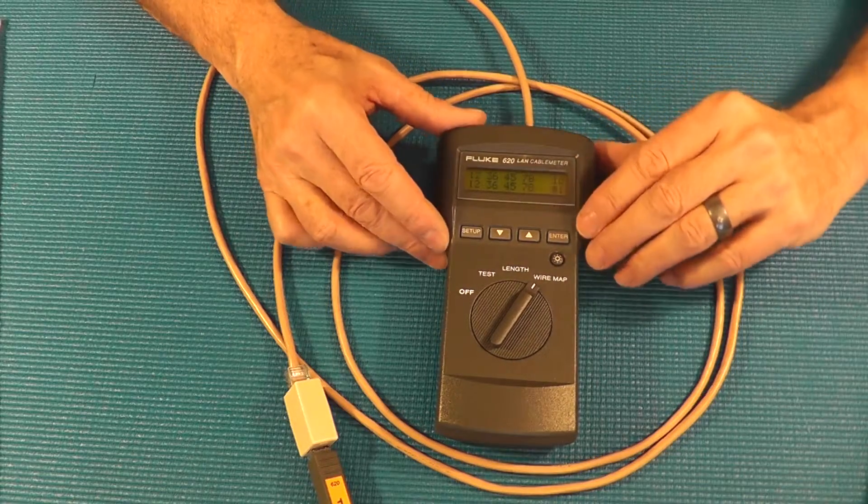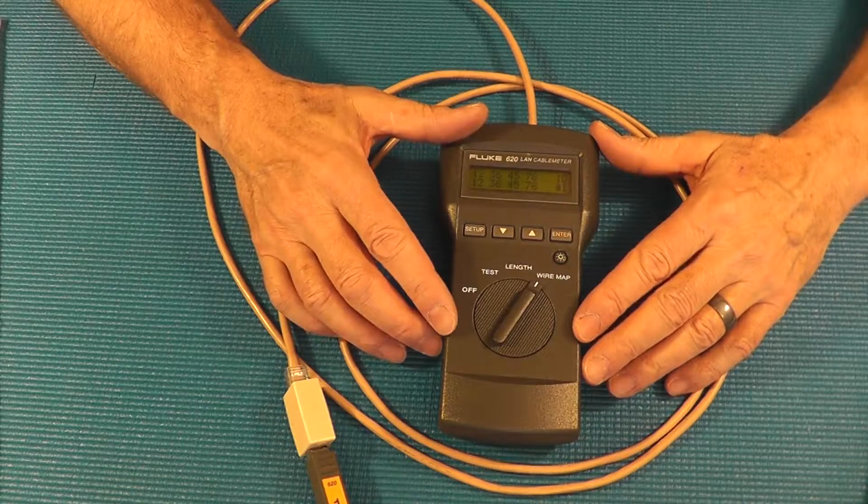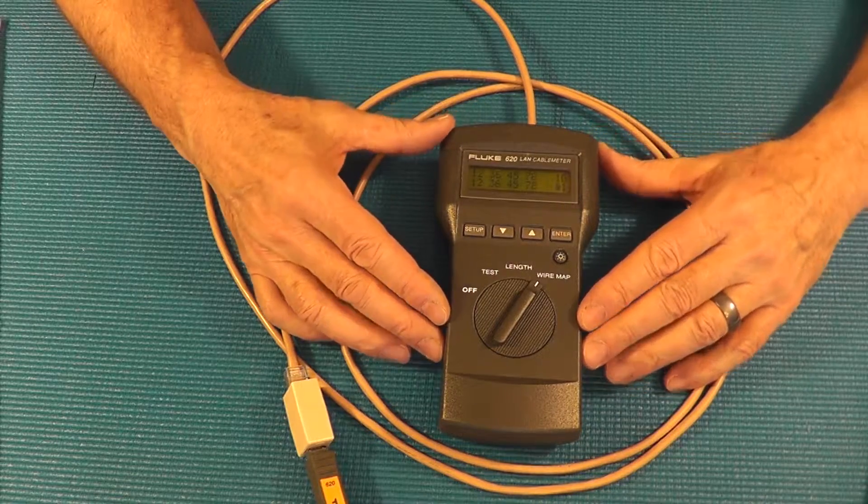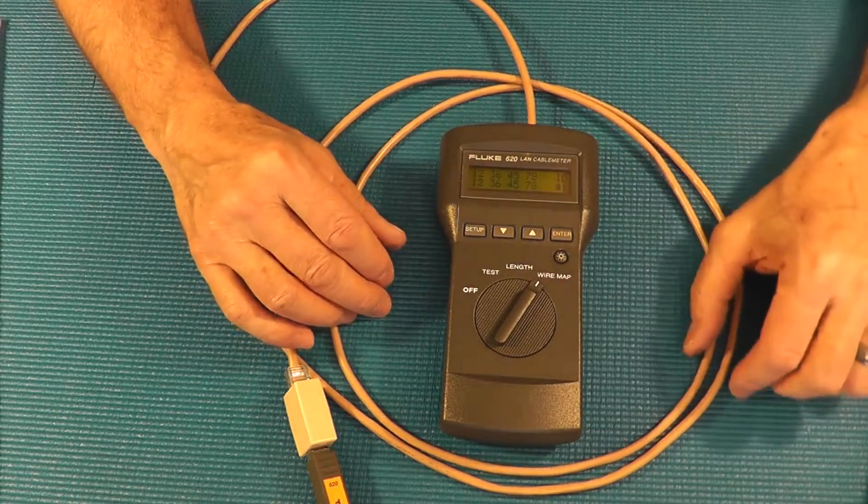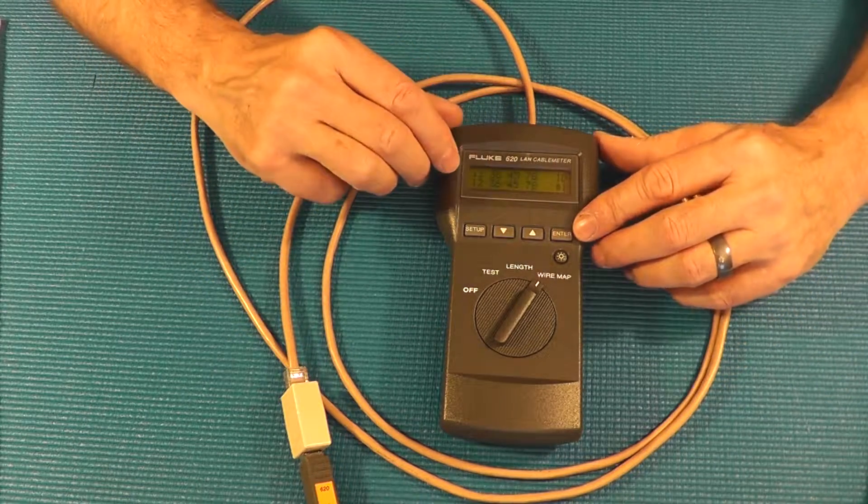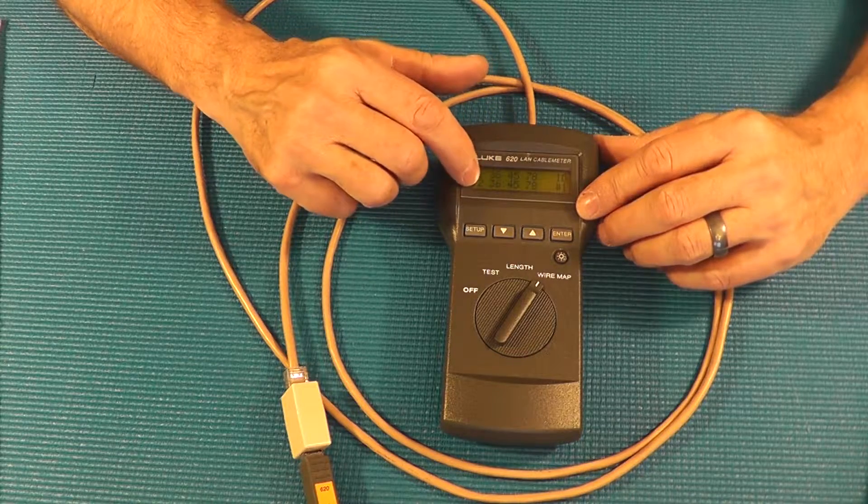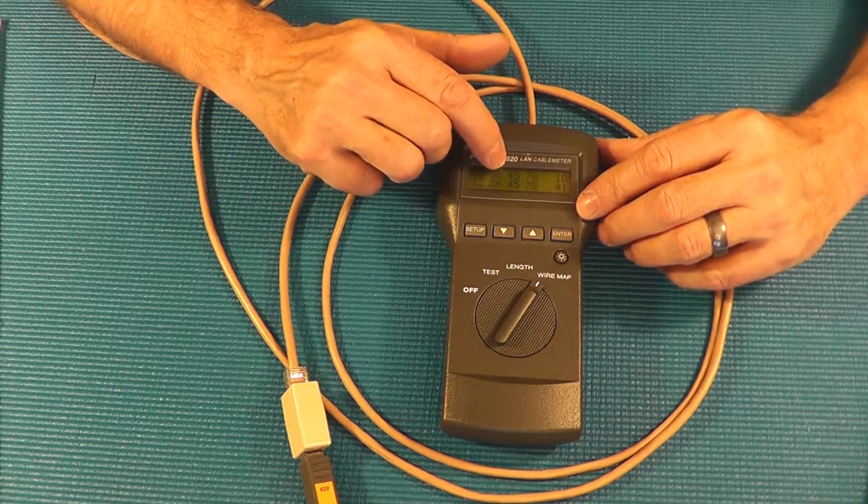One advantage that the Fluke has over the Link Master and the Pathfinder is when you test a crossover cable you'll see the results here. You'll see one two on one line, three six on the other line and then three six here and one two down here.